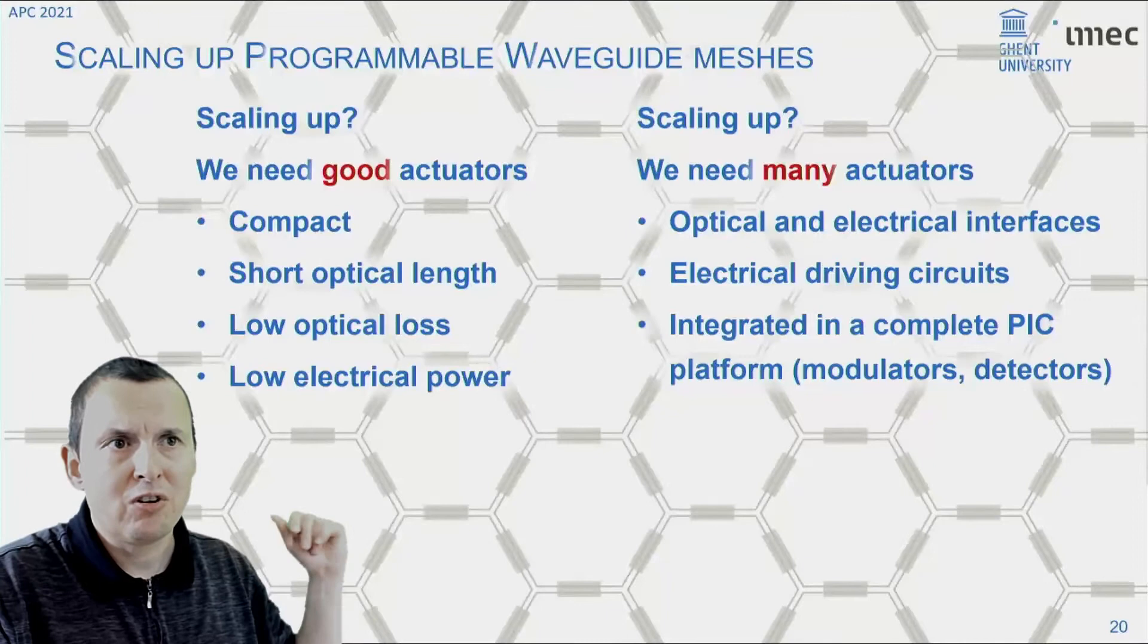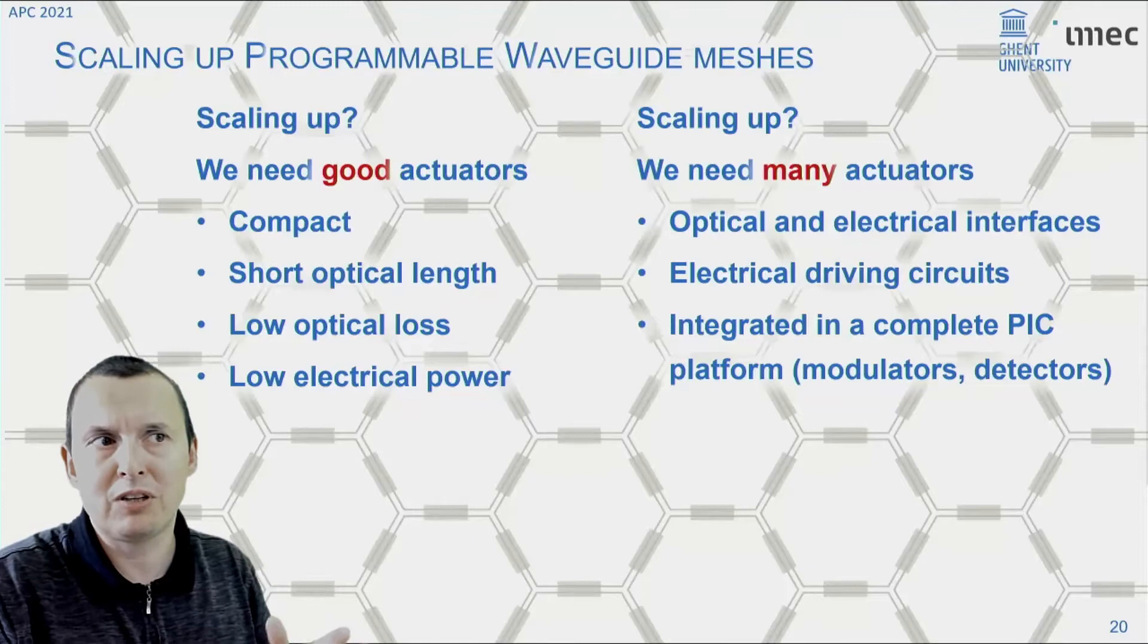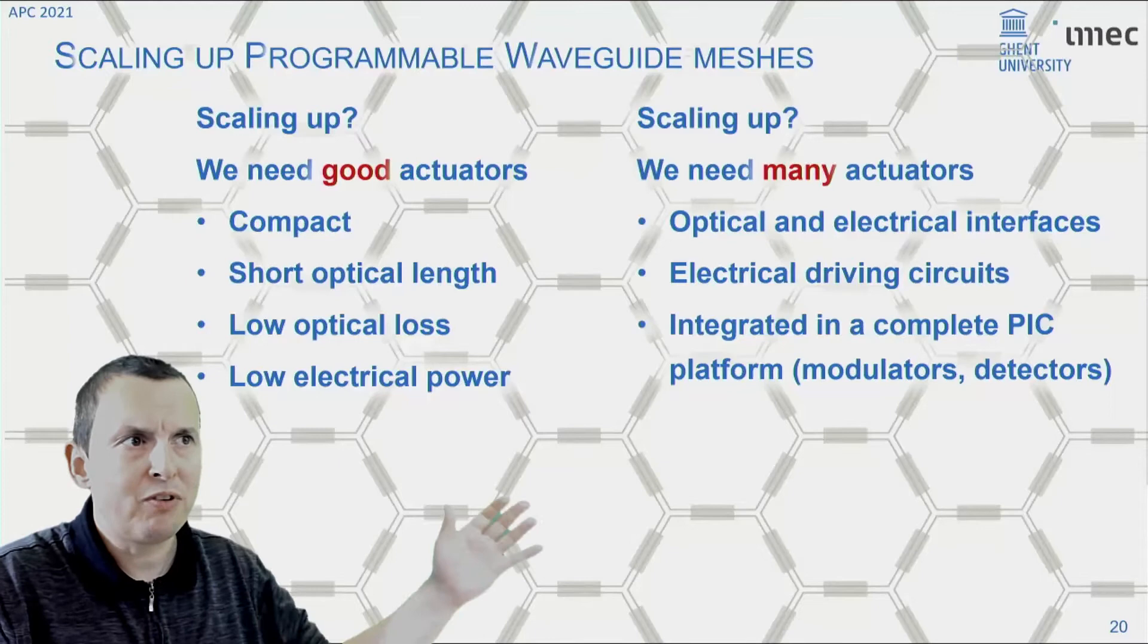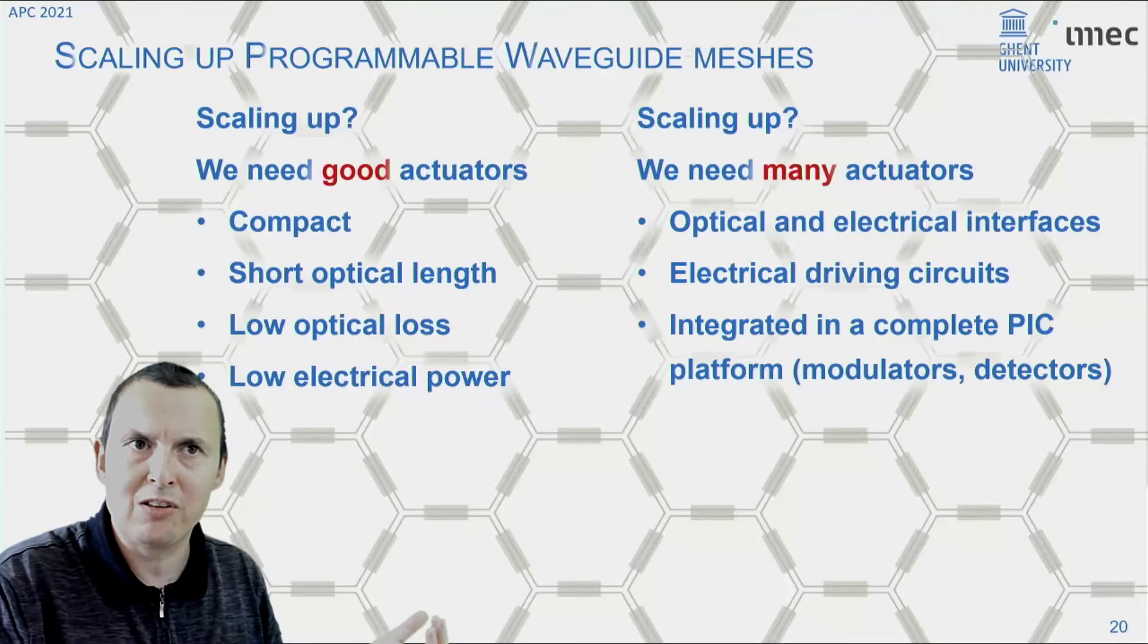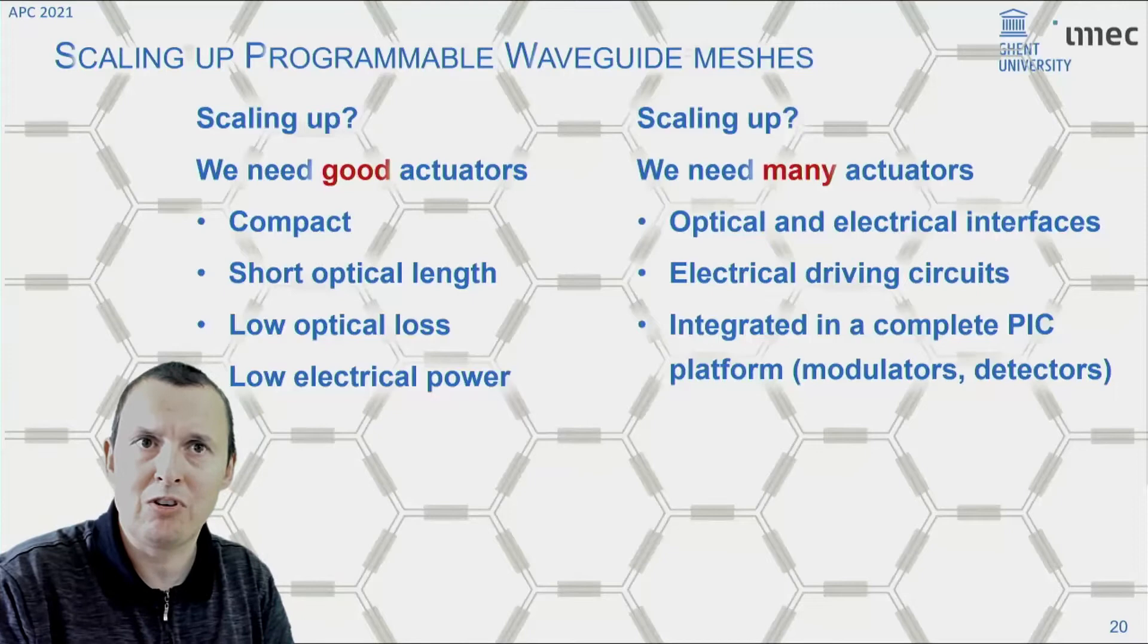The group of Jose Capmany demonstrated this seven cell circuit, so seven hexagonal cells, 60 phase shifters in the cells to make everything work, already in 2017. And with these 60 phase shifters, you can already configure this circuit into a hundred different ports or functions. Now, you can see that there's some clear bottlenecks here for scaling this up. You see all these metal wires going to the outside world. What happens if you want to scale this up to hundreds or even thousands of tunable elements, a much larger circuit? What is needed to enable this scaling?